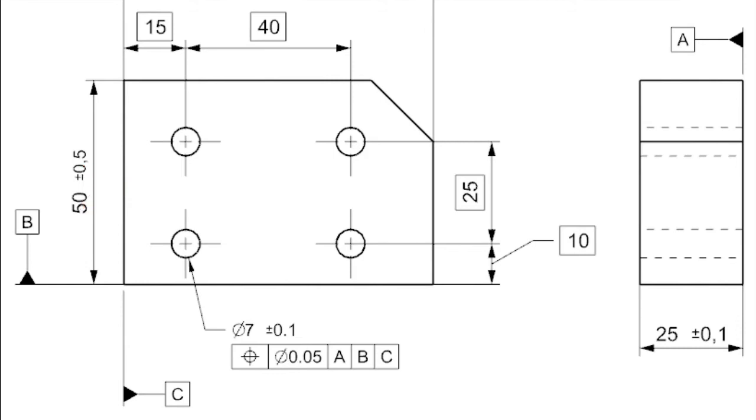The final datum feature C restrains the last degree of freedom and completes the datum reference frame coordinate system. Notice that what we call faces or surfaces in modeling are called features here in GD&T. In GD&T, these are called datum features, not datum surfaces.